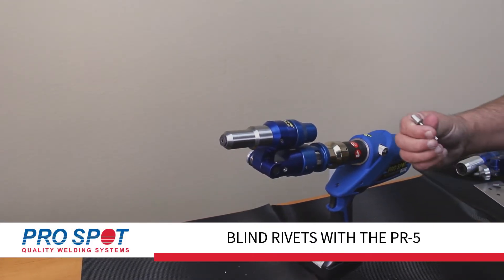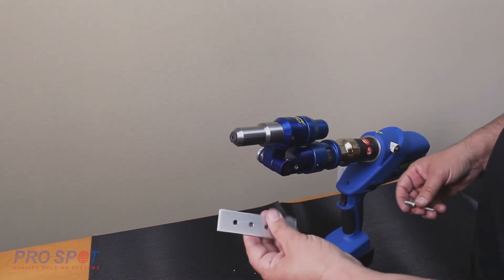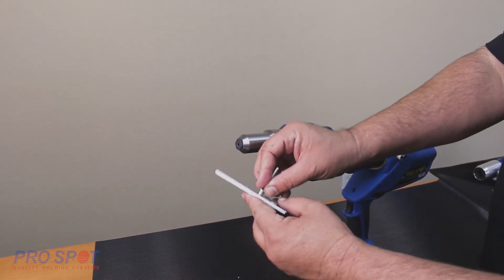For situations where you only have access from one side, we will use a blind rivet application. Start with a calibrated hole.